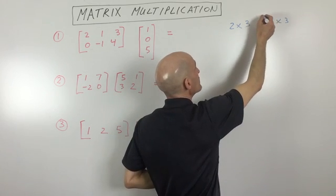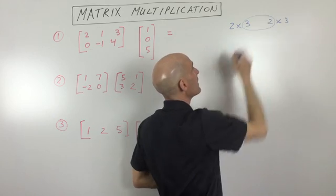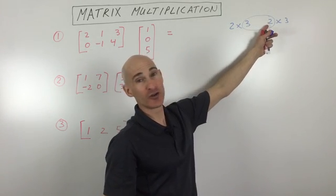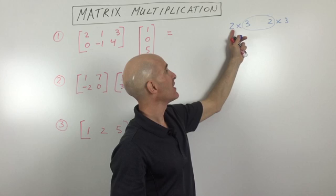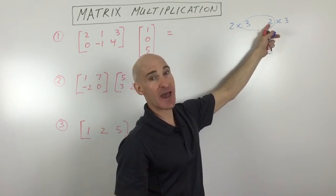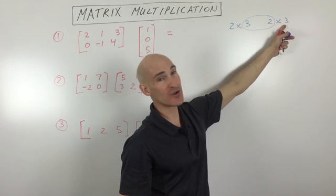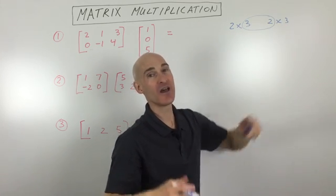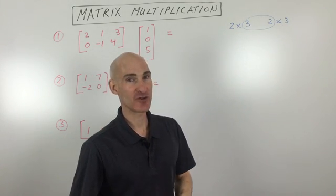So what I usually do is I write the dimensions down first and I check to see if those middle dimensions match. If they match, what you're going to end up with is a matrix that has the outer dimensions. So say that these matched here, you would end up with a two by three, two rows, three columns for your final matrix after you multiply them.